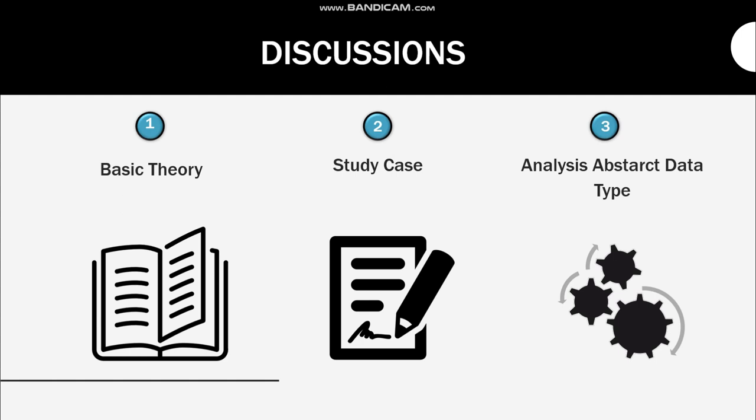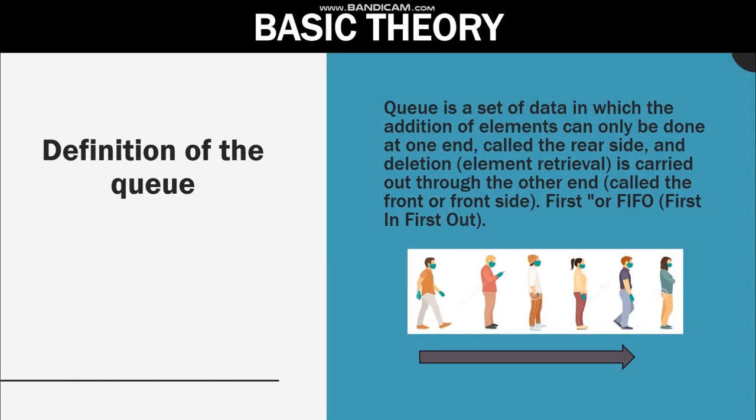In the basic theory, first I'm going to explain the definition of a queue. A queue is a set of data in which the addition of elements can only be done at one end called the rear side, and element retrieval is carried out through the other end called the front side. This follows the FIFO principle, which means first in, first out.